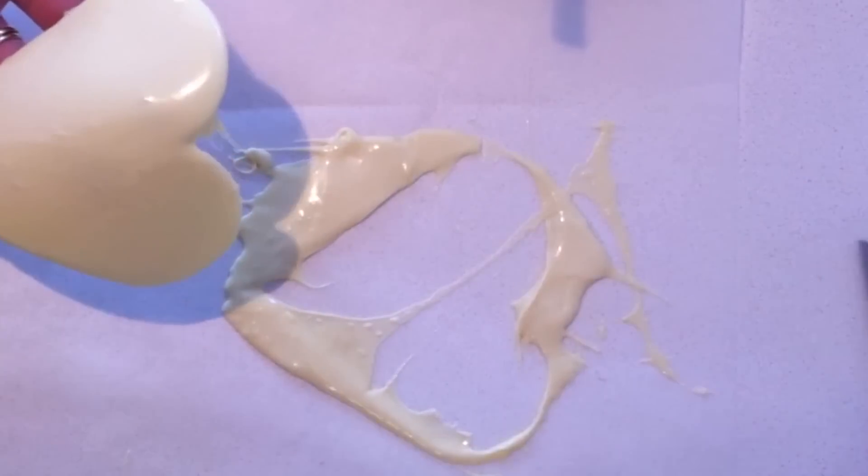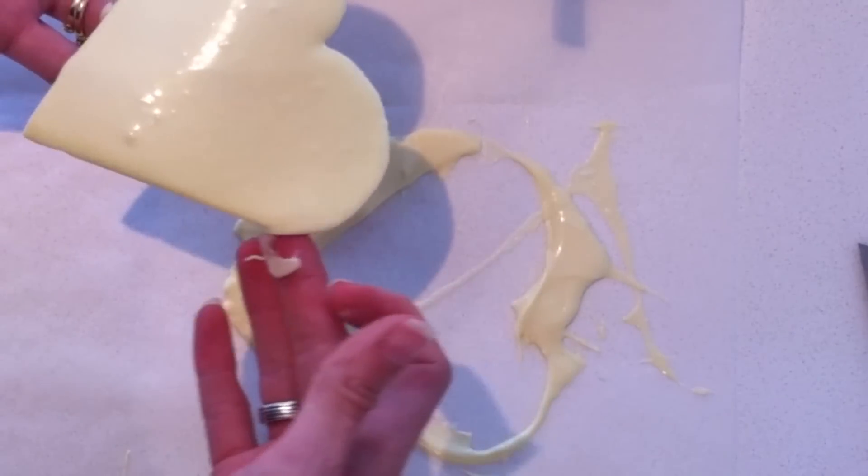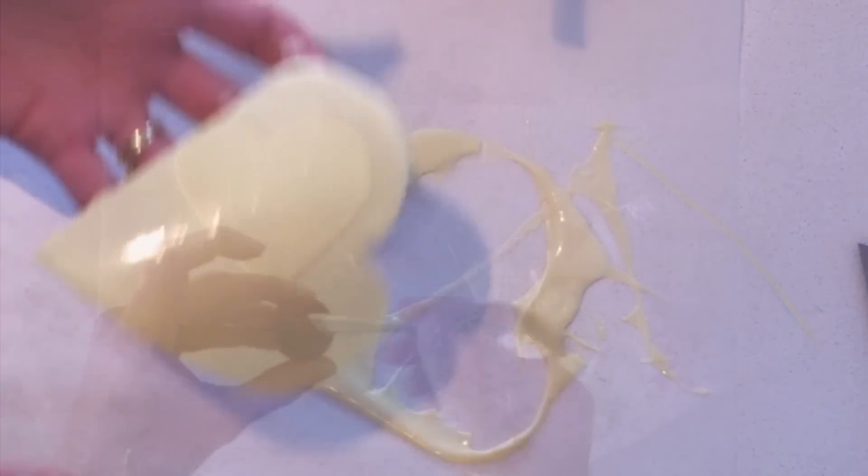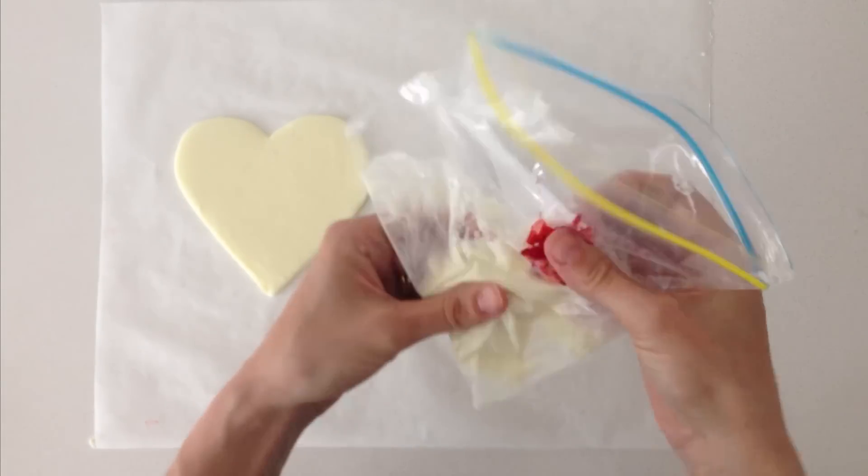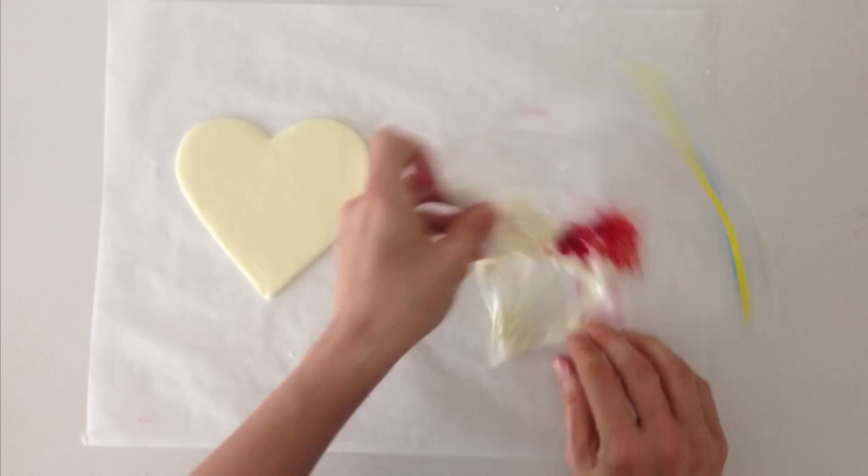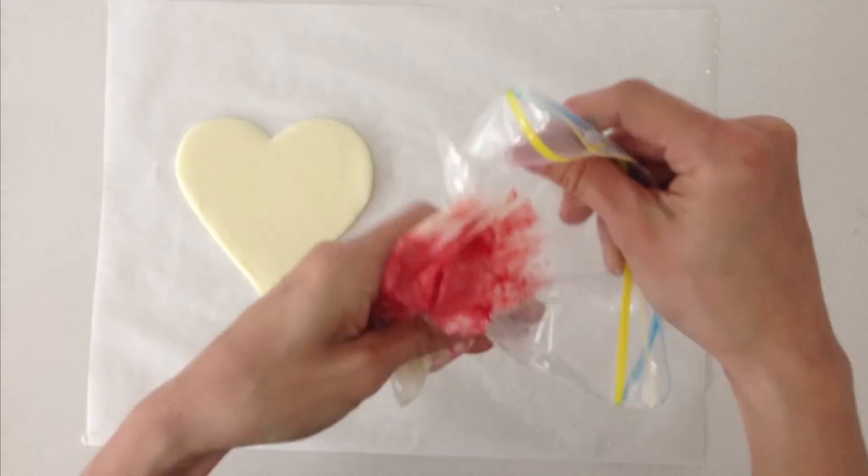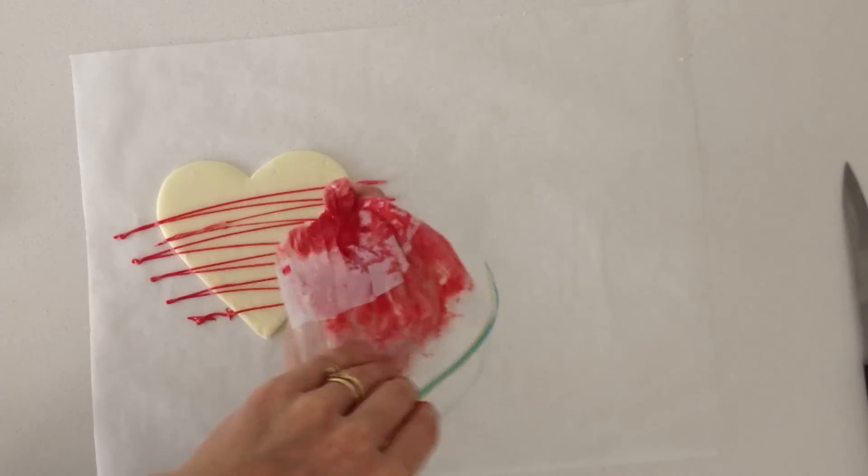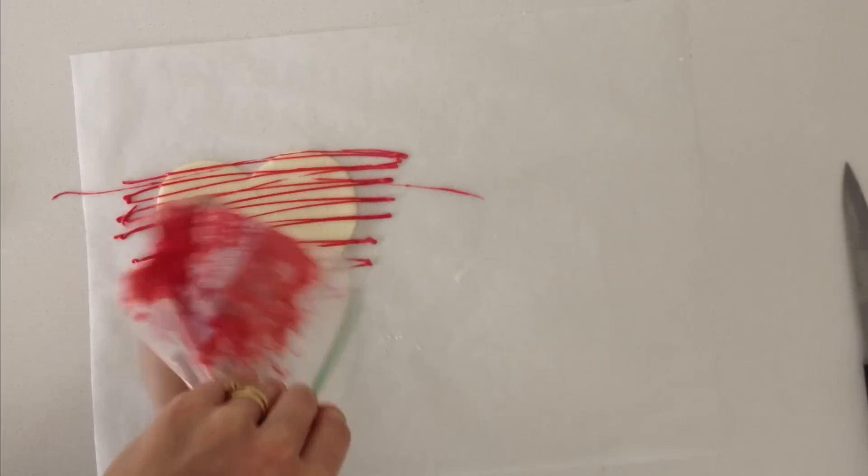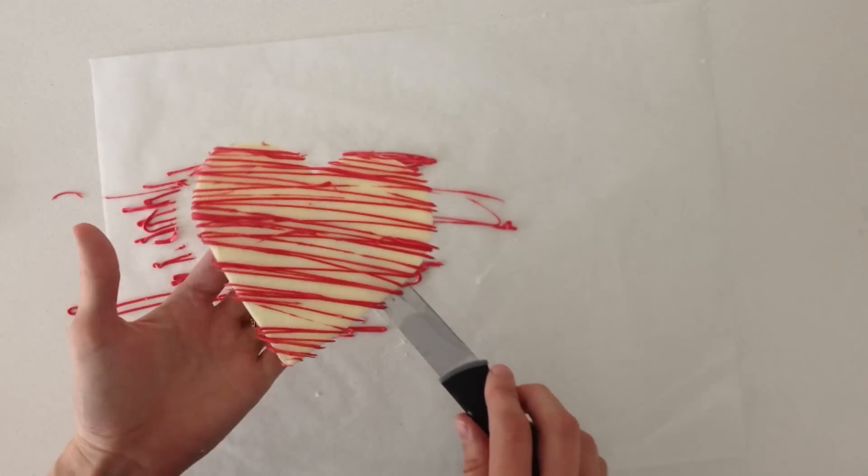And then you can either leave the lid plain, or if you want to decorate it you can add candies by just putting a bit of chocolate on the back of it and putting them on top. Or you can take some more of your chocolate and color it. But you need to use either oil-based colors or powdered colors because if you use the liquid colors it will cause the chocolate to seize. Mix it around with your chocolate and then I have just cut the corner off a ziplock bag and put stripes of a contrasting color on top of this one to make it a bit more interesting.